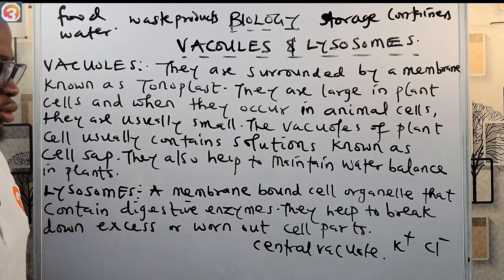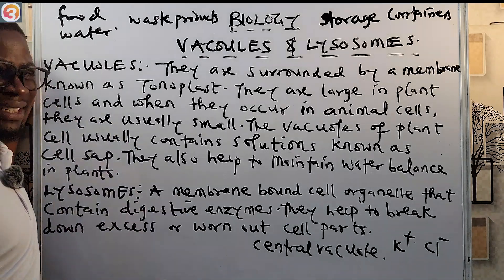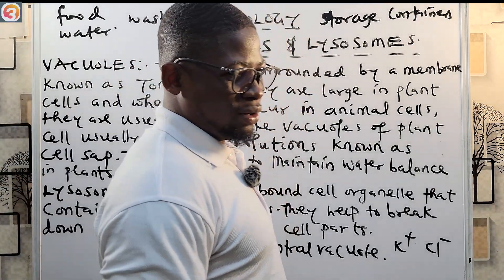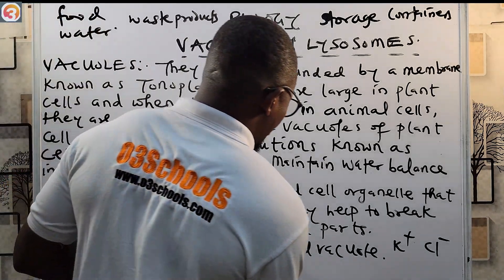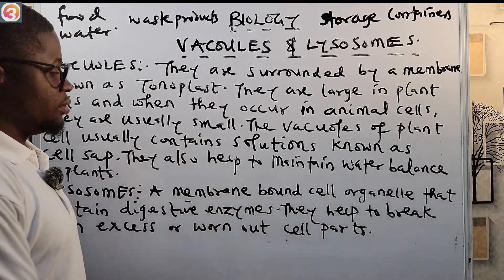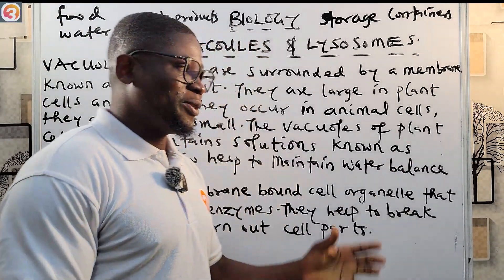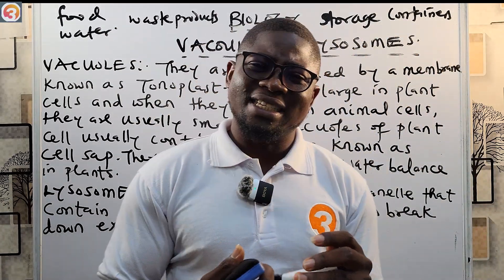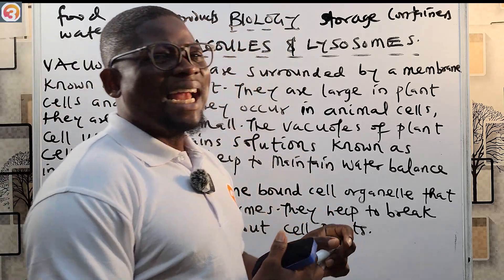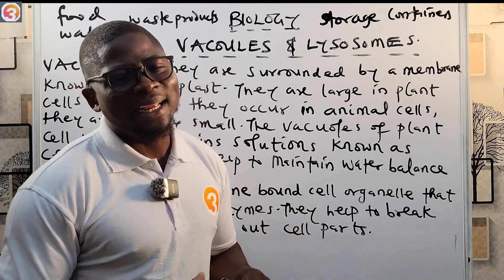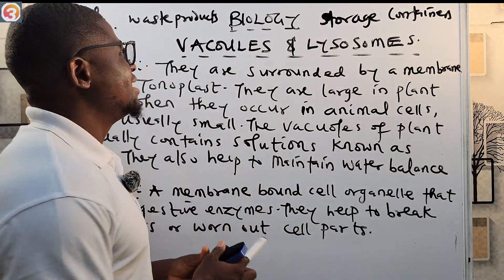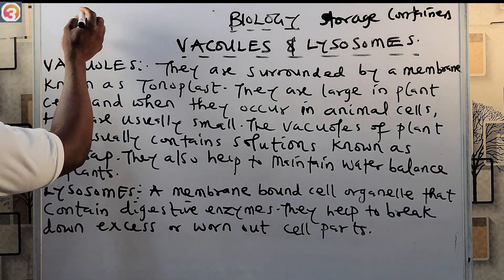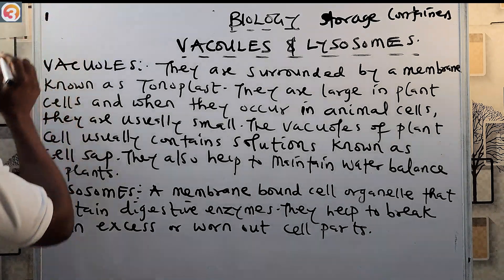In animal cells, vacuoles are sparsely scattered around the cytoplasm to store minerals and other substances. It is very important to note that vacuoles are more predominant in plant cells. Now we have the lysosomes. Lysosomes are membrane-bound organelles that contain enzymes to digest food molecules.